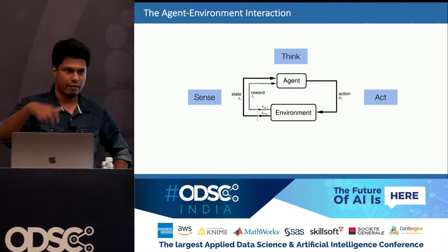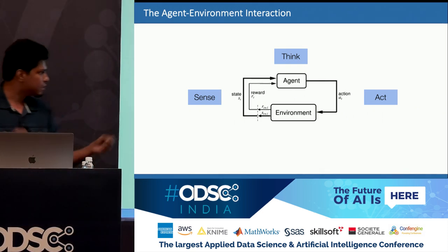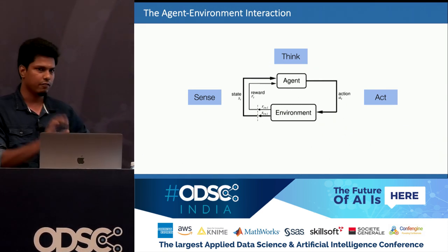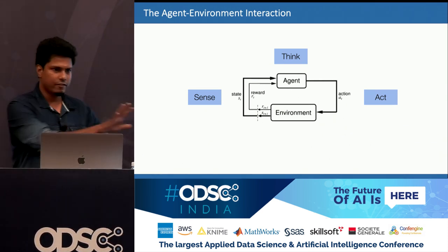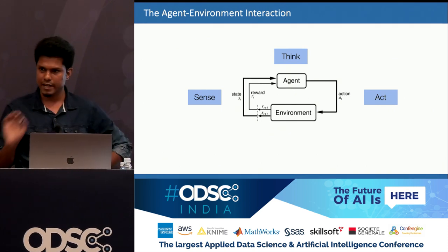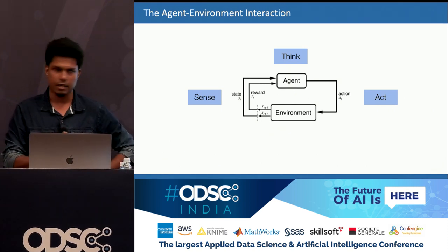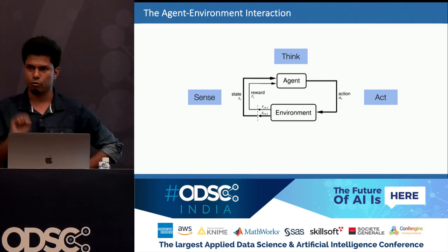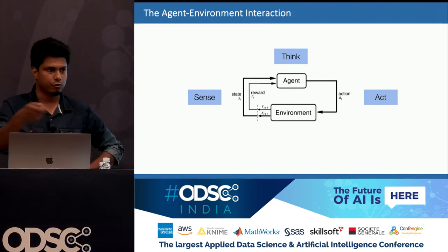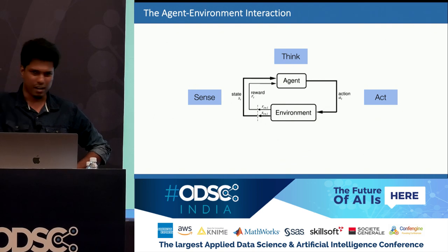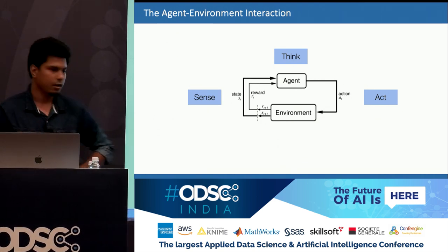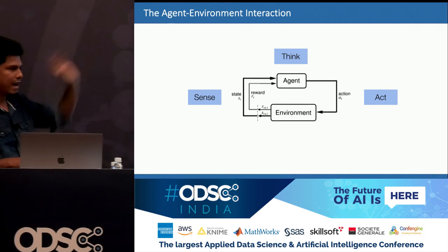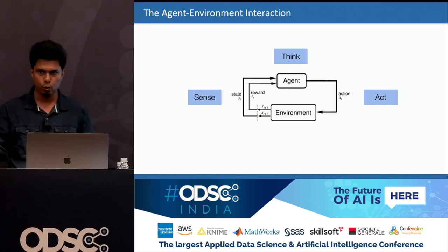The key thing to note about this action is that it influences the state of the environment the agent is in, and also influences the future actions this agent might take. Think about riding a car when you are constantly reacting to a dynamic environment. If you bump into someone, you are definitely changing the state of the environment. Similarly, if you take a wrong action and go slightly off the road, you will need to devote future actions to come back. So we have this sense, think, and act cycle.